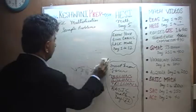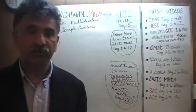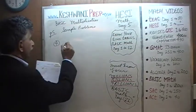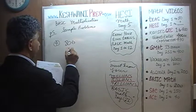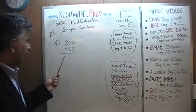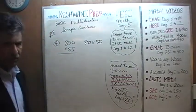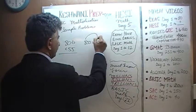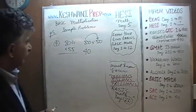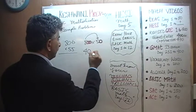We go at a relaxed pace — nobody is timing us right now, though in the real exam they will be. Problem number 4: 806 times 55. I'm not going to do 806 times 55 directly. Let's just multiply 800 times 50 — that should be close enough. Eight times 5 is 40, and we have three zeros total, so that's 40,000.